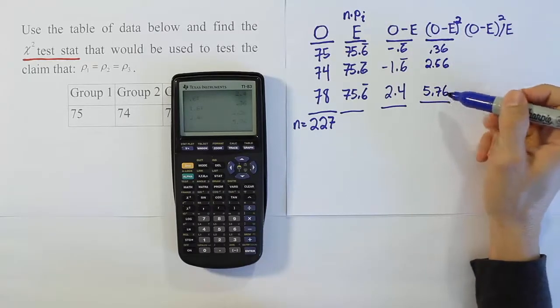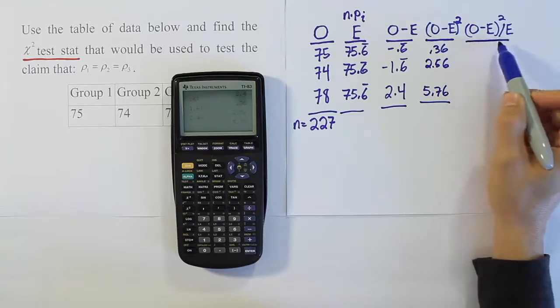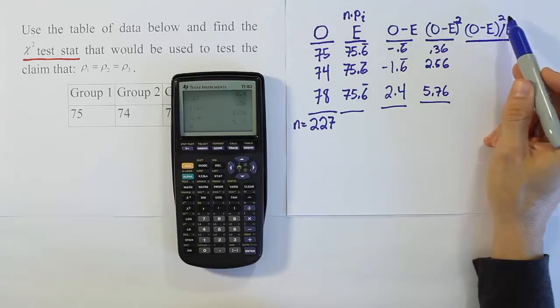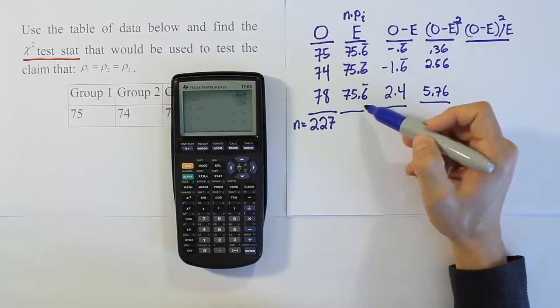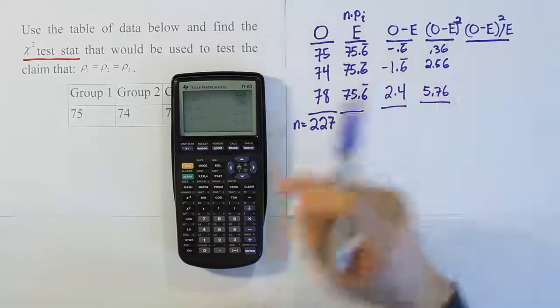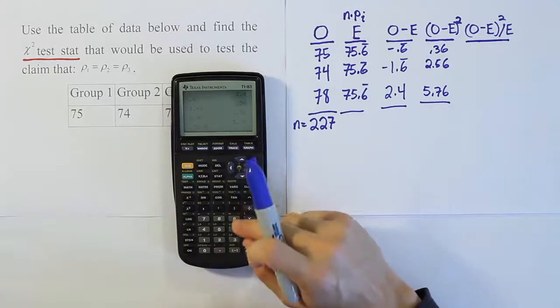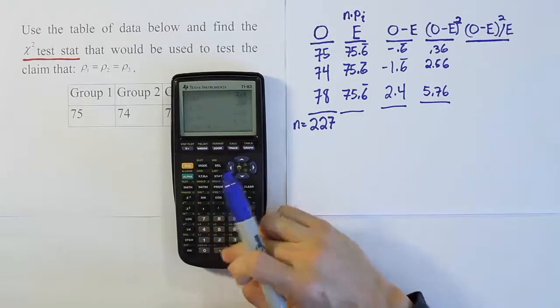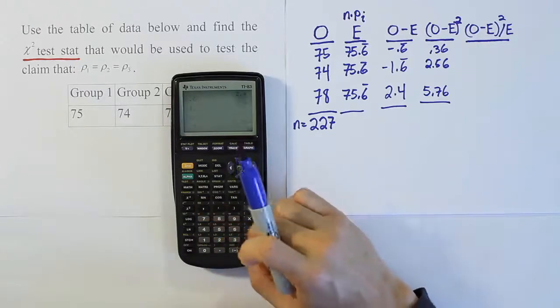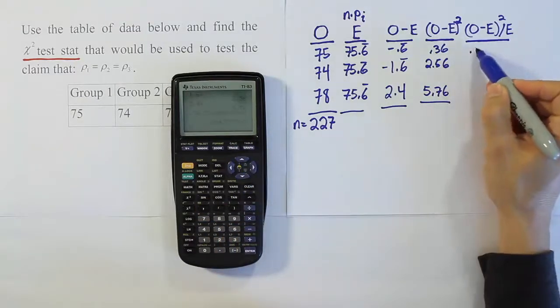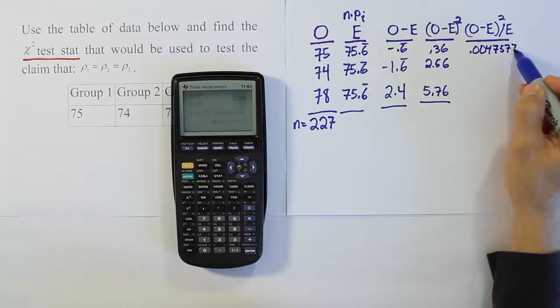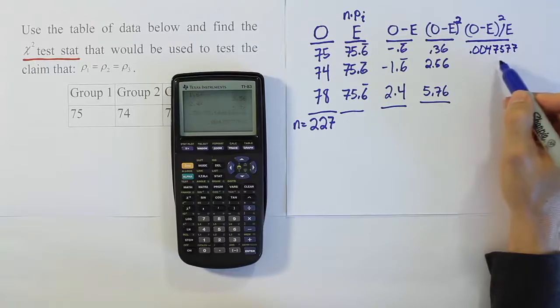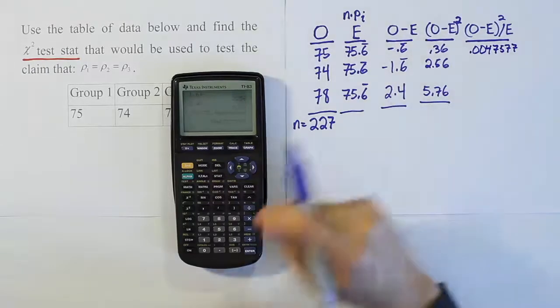Now that we've finished that, our next column, and this is the very important column of the procedure, the one that matters most, we're going to do observed minus expected squared divided by expected. So we're going to take everything in this column and divide it by what we see in this column. And since they're all the same here, it's nice and easy to do. We're just going to do 0.36 divided by 75.6 repeating, and we get the answer 0.0047577. And then I'm just going to round off that many places. In this case, I have 7 decimal places. You might say that's a lot of decimal places.